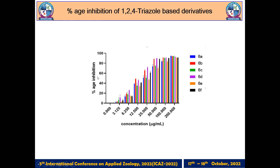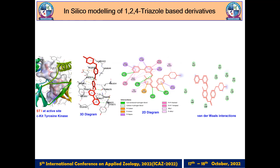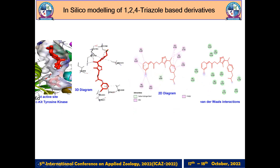This graph shows the percentage inhibition, and you can clearly see that compounds 6b and 6g were having the most promising results. The compounds were also checked through in silico modeling using cKit tyrosine kinase as the target protein, and compound 6d was found to have excellent results in in silico modeling as well.